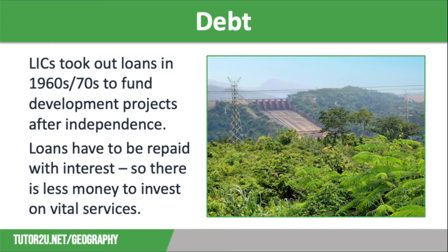These loans were usually to pay for large-scale infrastructure. One example is the Akosombo Dam on the Volta River in Ghana, that opened in 1963, which you can see on the screen. The project cost US$258 million and was constructed to provide electricity for the aluminium industry and to sell electricity to neighbouring countries,